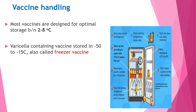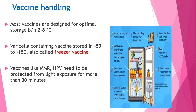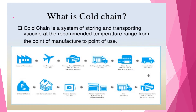Varicella-containing vaccines are also called freezer vaccines. Vaccines like MMR and human papillomavirus need to be protected from light exposure for more than 30 minutes. The other issue is about the cold chain. Cold chain is a system of storing and transporting vaccines at a recommended temperature from the point of manufacture to the point of use.